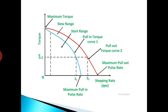The pull-out torque curve shows the maximum stepping rate at which the motor can run for different values of load torque if the motor is already synchronized, but the motor cannot start, stop, or reverse its direction of rotation at this rate. S1 is the maximum pulse rate per second at which the stepper motor can be started, synchronized, stopped, or reversed for a particular load torque TL. Once the motor is started and synchronized, the pulse rate may be increased up to S2 without losing synchronism.